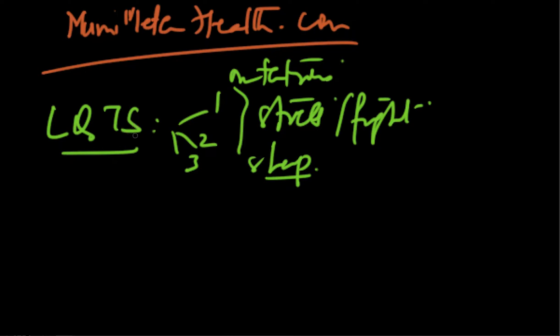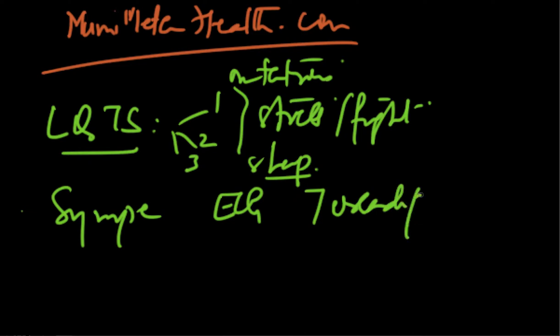Long QT Syndrome is characterized by syncope. Obviously, you'll have to have clinical presentation. The ECG will show a torsad pattern, a torsad de pointes we call it, which is very characteristic of a polymorphic VT.